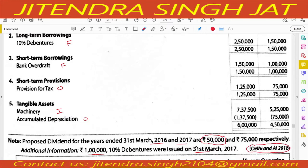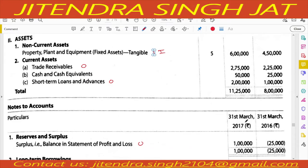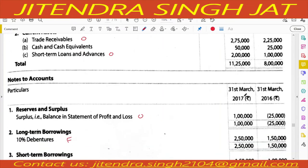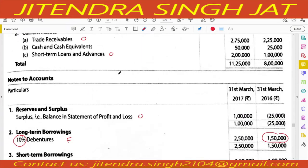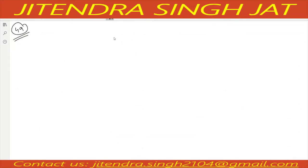Since debentures of 1 lakh are issued on 31st March 2017 — the last day of the year — we do not calculate interest on them. Interest is calculated only on 1,50,000. The proposed dividend of the previous year is taken. Only these two points are key. Let's start the cash flow statement.